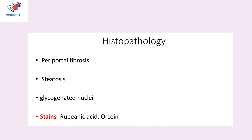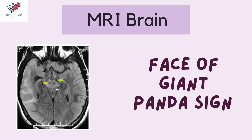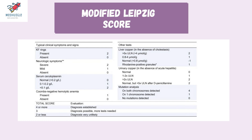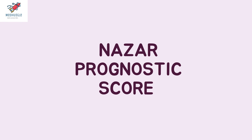A characteristic finding on MRI brain is the face of the giant panda sign. Two scoring systems are used: the modified Leipzig scoring system for establishing the diagnosis, where a score more than 4 establishes the diagnosis; and the Nazar's prognostic scoring system, where a score more than 9 indicates a bad prognosis and a need for liver transplant.